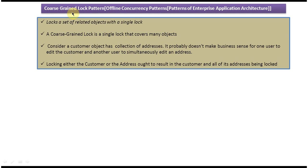Today I will cover the coarse-grained lock pattern. This pattern belongs to offline concurrency patterns, which belongs to patterns of enterprise application architecture. The explanation of coarse-grained lock pattern is: lock a set of related objects with a single lock. A coarse-grained lock is a single lock that covers many objects.